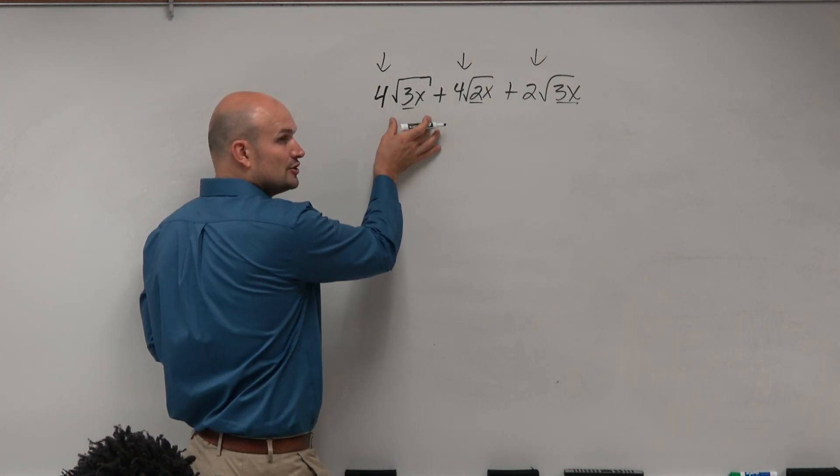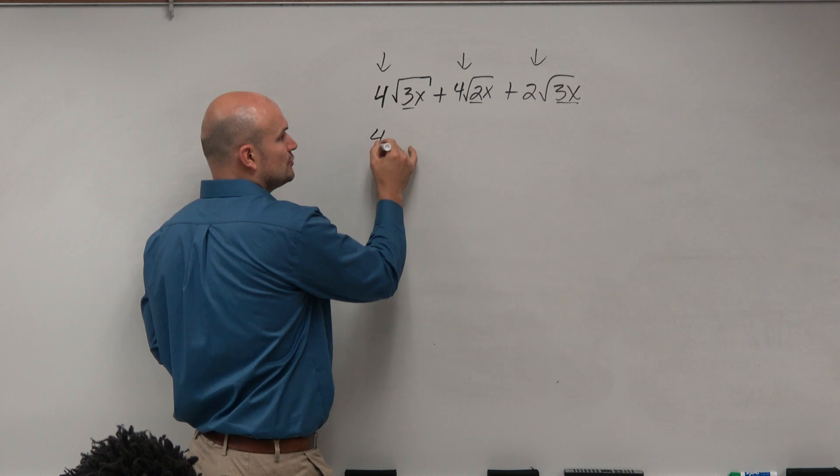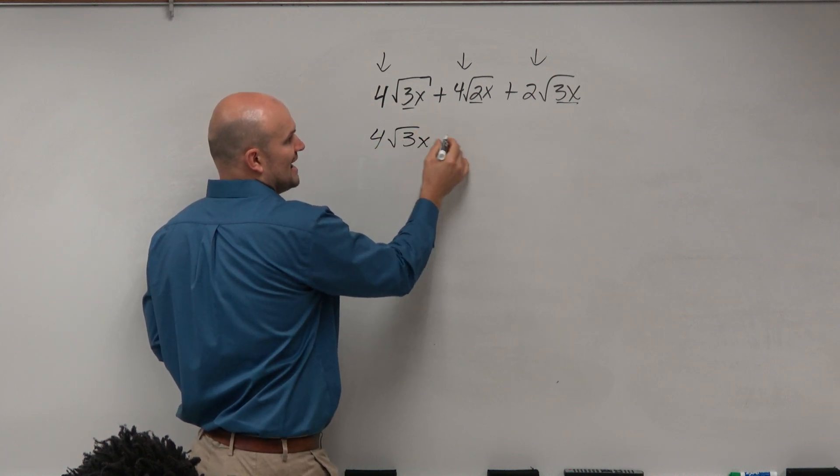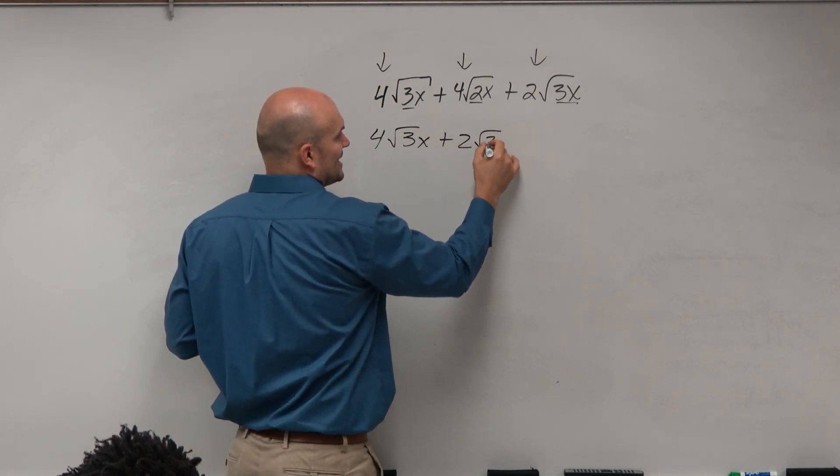So the radicand, again, is what's under the radicals. What I'm going to do is group them together with the same index and radicand.